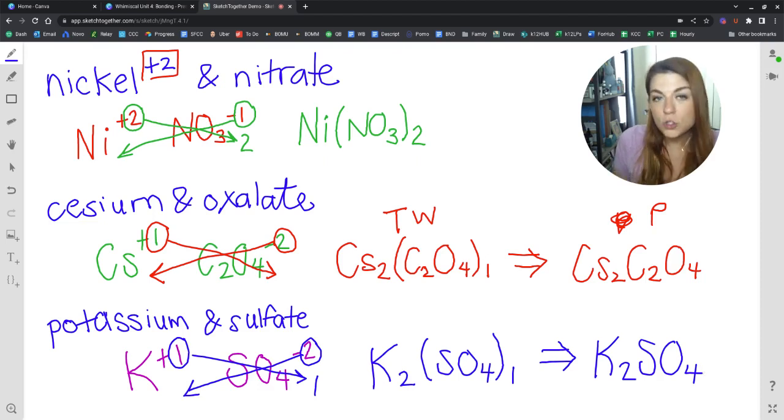And this is because we don't need the parentheses to indicate that there is one sulfate ion because writing SO4 is enough to indicate that we have one sulfate ion. So that is what I have for you on polyatomic ions. Please make sure to leave any questions you have in the comment section below the video. Subscribe so you don't miss the next lesson. And I will see you there. Bye.